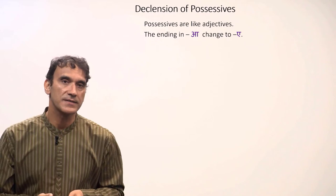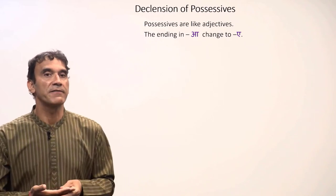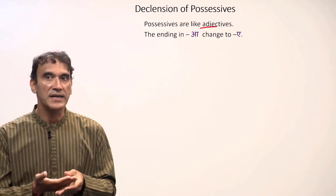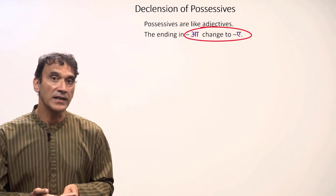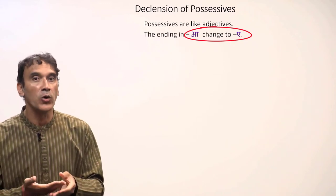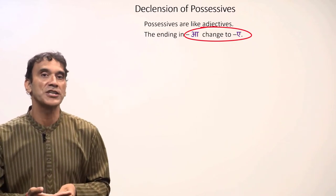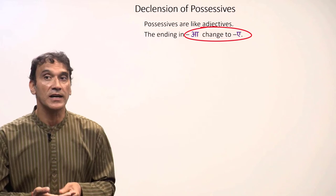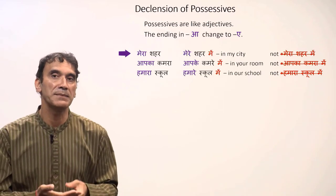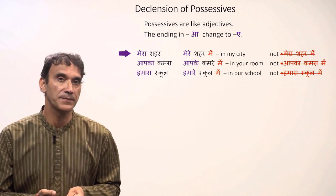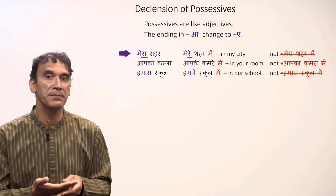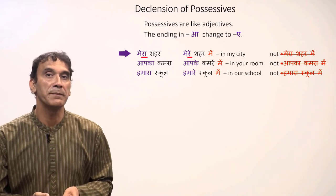Now let's take possessives. Possessives behave like variable adjectives — masculine possessives end in 'ā,' so they will change to 'e' with a postposition. Only possessives that end in 'ā' change; the others do not. For example: 'mera shaher' (my city) becomes 'mere shaher mein' (in my city) — the 'ā' of 'mera' becomes 'e.' It will not be 'mera shaher mein.'